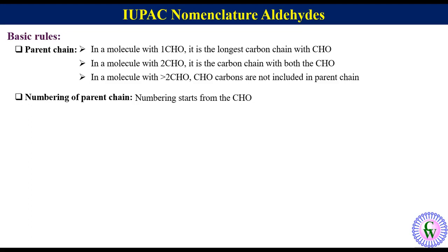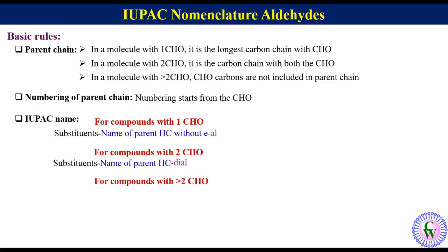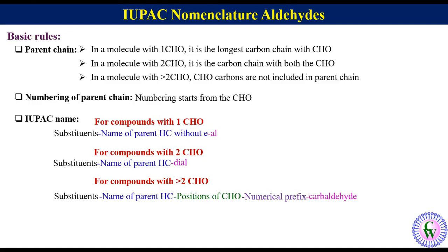The second rule is regarding numbering of the parent chain — numbering starts from the CHO. The third point is regarding the structure of the IUPAC name. For compounds with one CHO: substituents + name of parent hydrocarbon without 'e' + 'al'. For compounds with two CHOs: substituents + name of parent hydrocarbon + 'dial'. For compounds with greater than two CHOs: substituents + name of parent hydrocarbon + position of CHO groups separated by commas + numerical prefixes like tri, tetra, penta + 'carbaldehyde'.